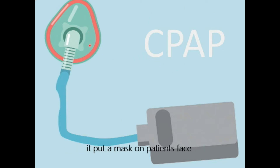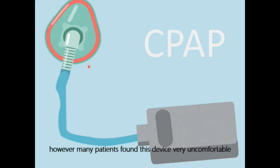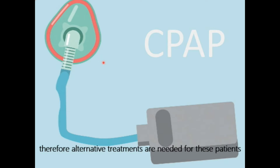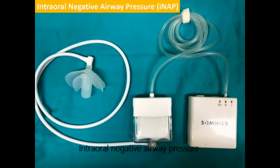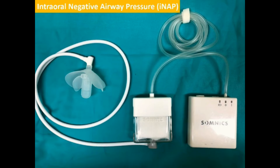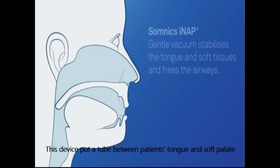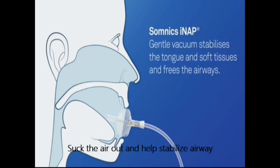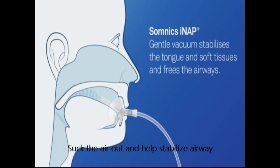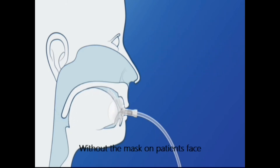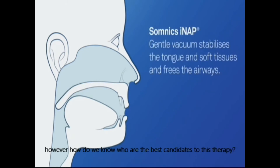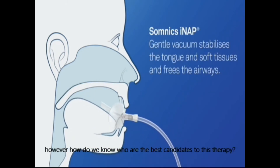CPAP puts a mask on the patient's face and blows the patient's airway open when they experience sleep apnea. However, many patients find this device very uncomfortable and are not able to wear this mask the whole night. Therefore, alternative treatments are needed for these patients. Intraoral negative airway pressure, also known as INAP, is one of the alternative treatments for OSA.